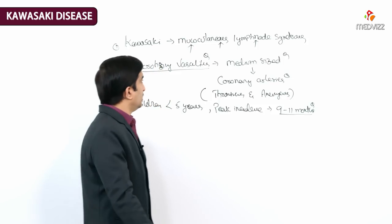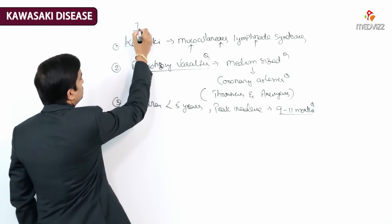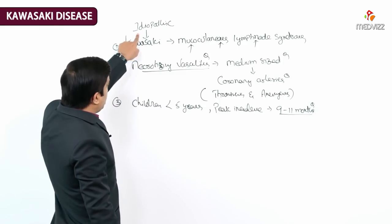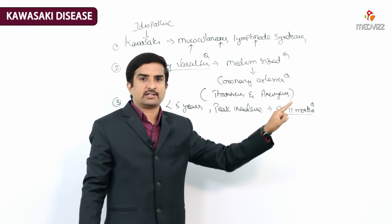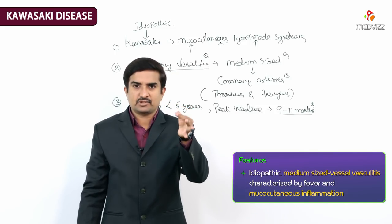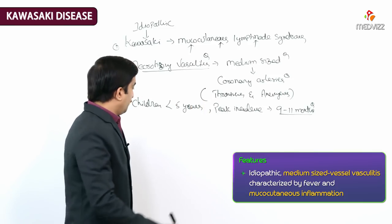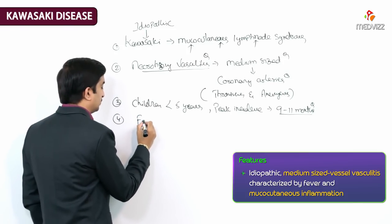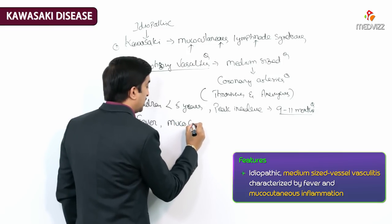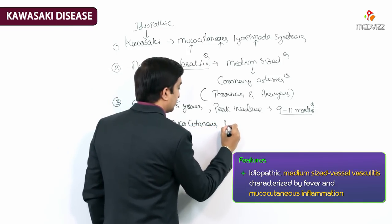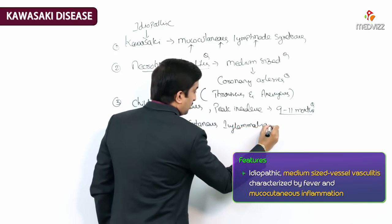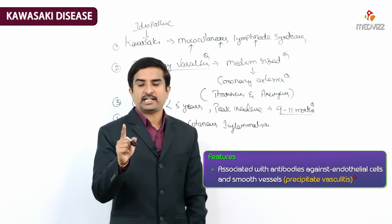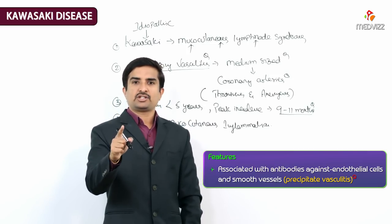The cause of Kawasaki is idiopathic. It is an idiopathic necrotizing vasculitis of medium-sized vessels, mainly the coronary arteries, characterized by fever as well as mucocutaneous inflammation.